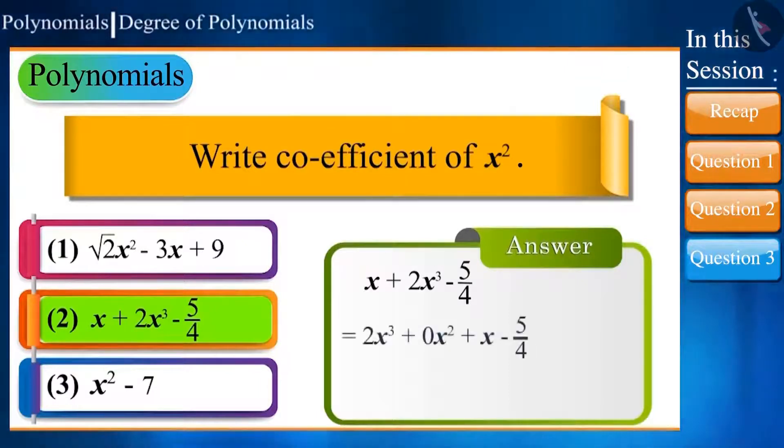This expression can also be written like this, where the coefficient of x square is 0, and hence this complete term is 0. In an expression or polynomial, if the x square term is not present, then its coefficient will be 0.